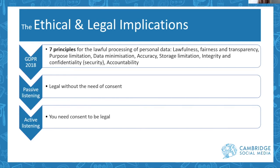Moving on to the ethical and legal implications. We all know about the GDPR, introduced in 2018, which put lots of constraints on how you process personal data or when you search for it. The principles are: lawfulness, fairness, accuracy, and storage. The types of processing include storing data, using it for remarketing or retargeting. These are the principles you should apply to your processing.